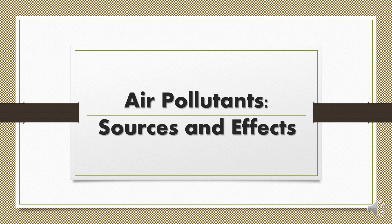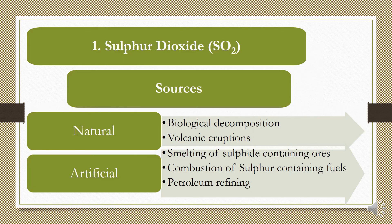The next category is air pollutants, their sources, and the effects they cause. The first air pollutant is sulfur dioxide, abbreviated as SO2. Among natural sources, biological decomposition of dead and decaying material and volcanic eruptions are major natural sources of SO2. Among artificial sources: smelting of sulfide-containing ores, combustion of sulfur-containing fuels, and petroleum refining.